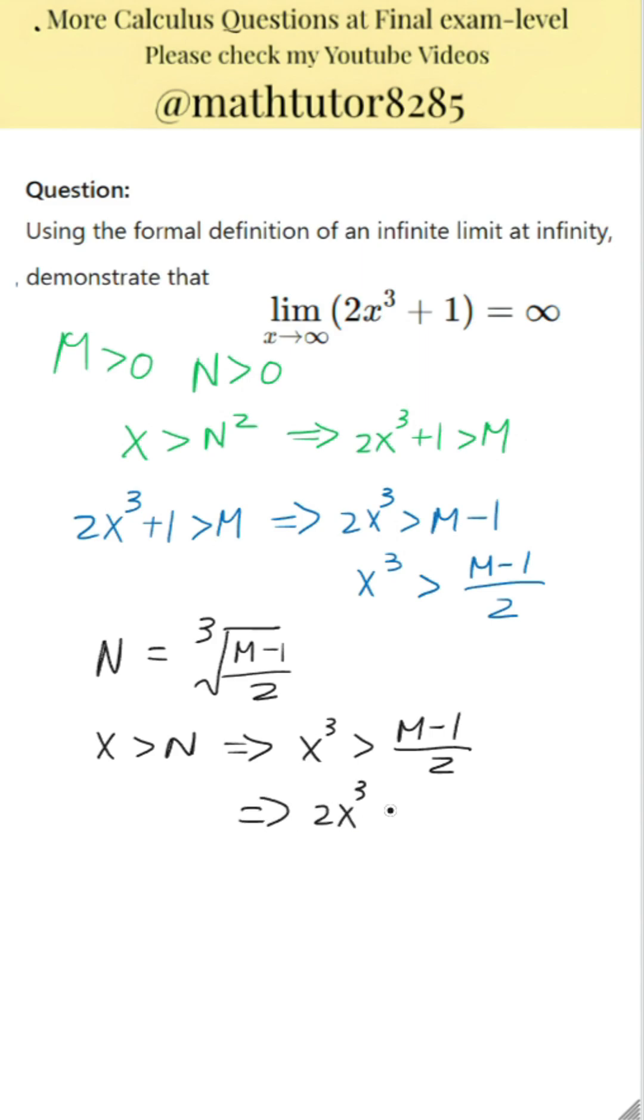This implies 2 times x cubed is greater than M minus 1, and finally, 2 times x cubed plus 1 is greater than M.